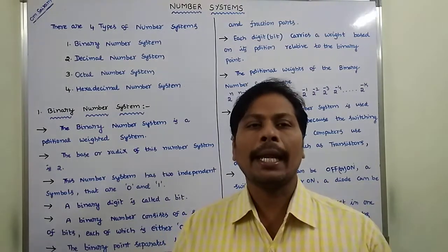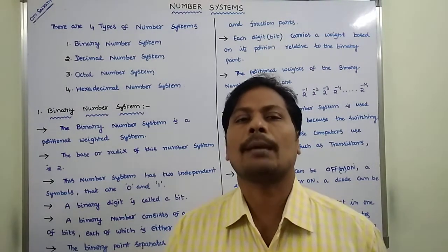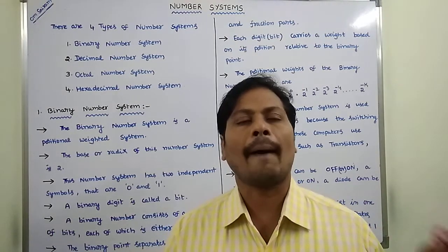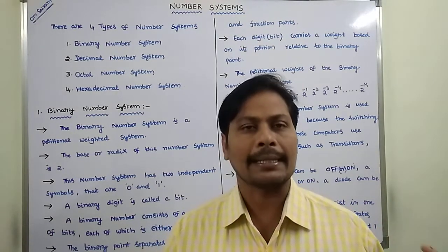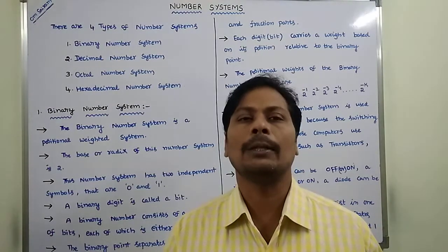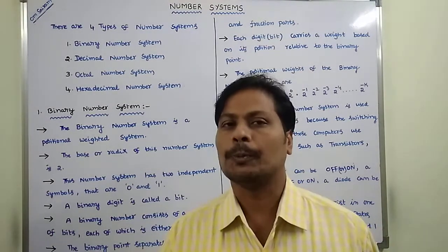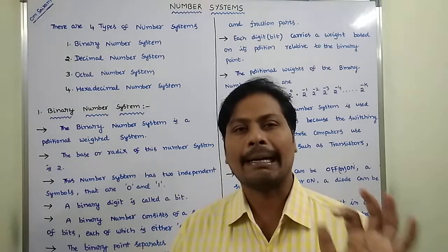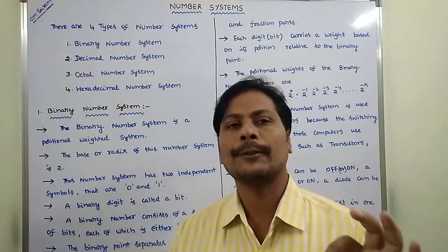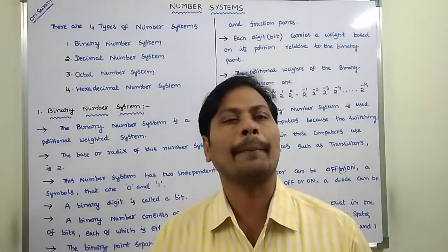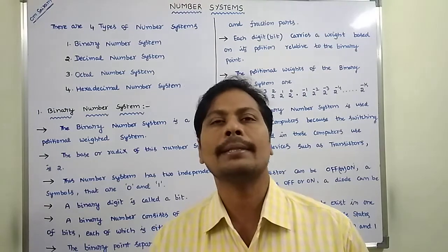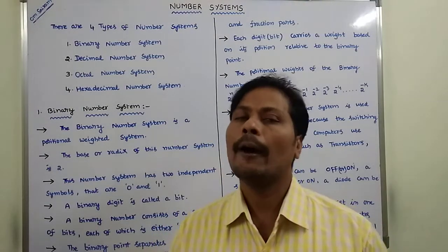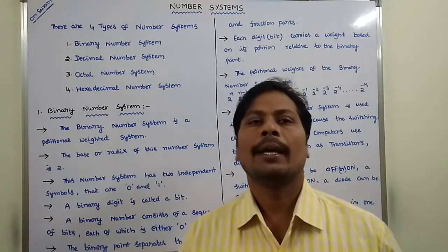A binary number system has a base or radix equal to two. Because of this, it consists of two independent symbols: either zero or one.